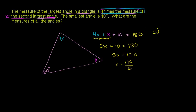Let me verify this. 5 goes into 170 — it should be 34 times because it's going to go into it twice as many times as 10 would. So 10 would go into 170 17 times, and 5 would go into 170 34 times. We can verify: 5 goes into 17 three times, 3 times 5 is 15, subtract to get 2, bring down the 0, 5 goes into 20 four times with no remainder. So it's 34. x is equal to 34.